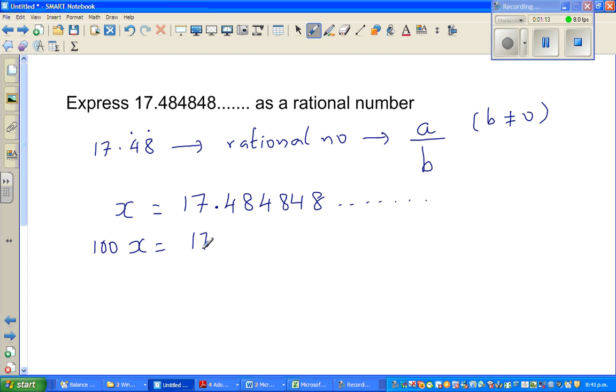So this is 1748. So this is becoming 100 times more. So if it becomes 100 times more, this is 1748.4848.4848. It goes on to infinity.